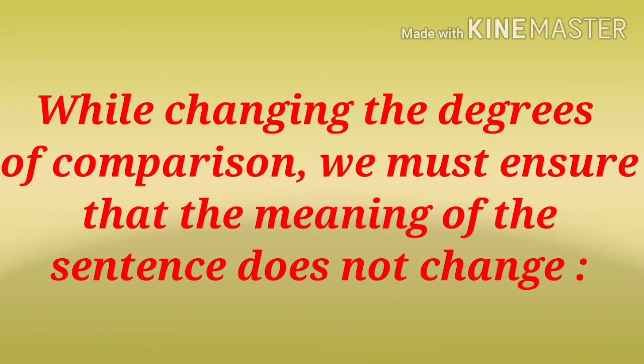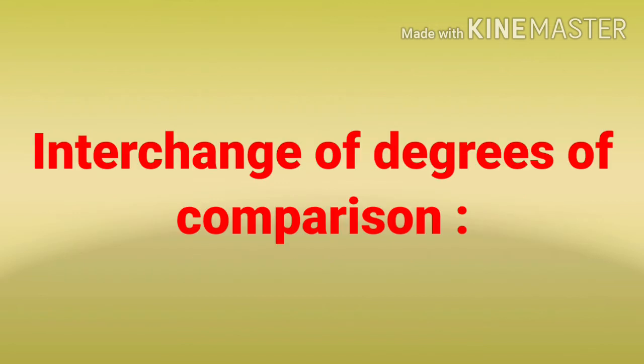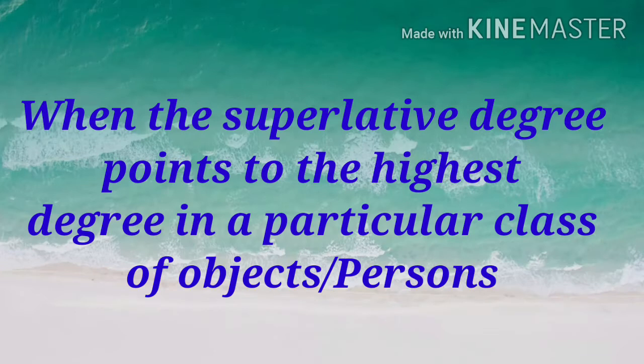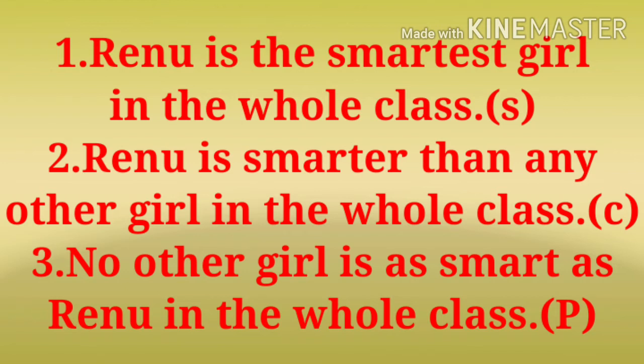While changing the degrees of comparison, we must ensure that the meaning of the sentence does not change. Rules to interchange the degrees of comparison of adjectives in a sentence without changing the meaning. The first rule is when the superlative degree points to the highest degree in a particular class of objects or persons. Example: 'Renu is the smartest girl in the whole class.' It is a superlative degree because the format is: the + adjective + est.